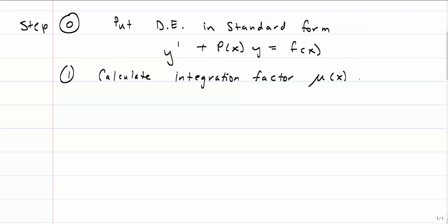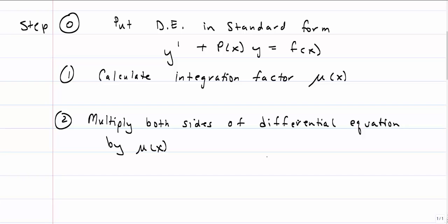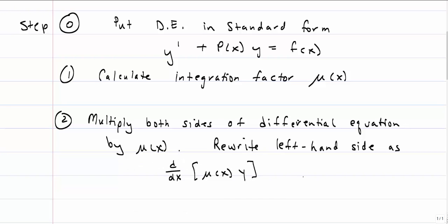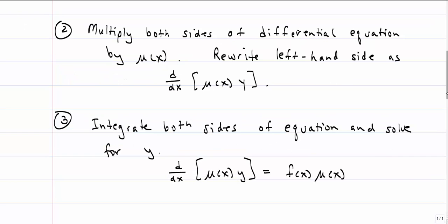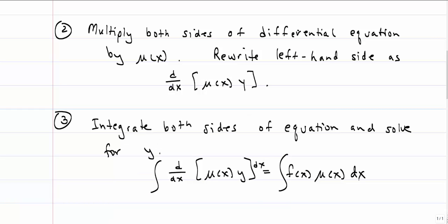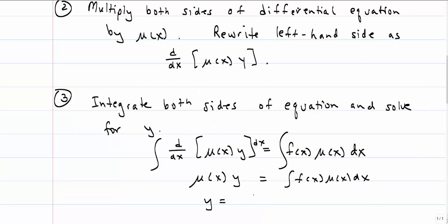The next thing we're going to do is calculate the integration factor mu(x). You don't know how to do this yet or why we're going to do it, but step one is: calculate the integration factor. Step two is to multiply both sides of the differential equation by mu(x), and then rewrite the left-hand side as d/dx of [mu(x) · y]. The reason we want to do that is so we can simply integrate both sides and solve for y. The left-hand side works out nicely — integrating d/dx gives mu(x)·y — and then we solve for y to get our solution.